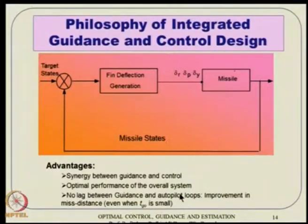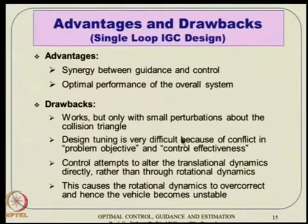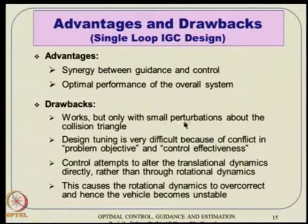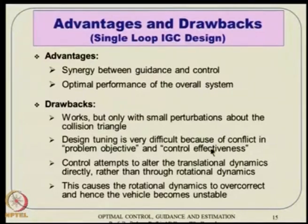Everything happens at the six-DoF level, and there is essentially no lag between guidance and autopilot loops, so we expect improvement in the miss distance as well. But the drawback is: in our own observation, it works only with small perturbation about the collision triangle. Otherwise the tuning becomes quite difficult, because of a conflict between problem objective and control effectiveness.